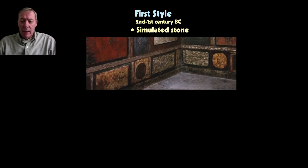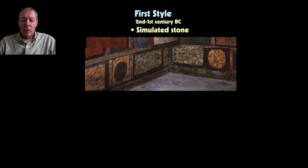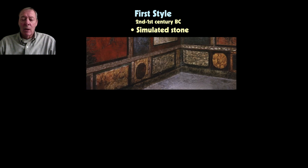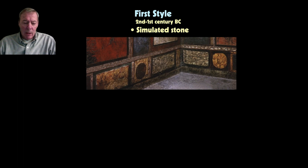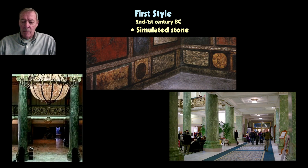The first style was most popular from the second to the first century BC. It basically focused on the simulation of stone. Here at Pompeii we see panels that look as though they are veneers of colored stone, but they are in reality painted fresco panels—the intention was to make a concrete or stone wall covered with plaster look like expensive stone veneers. A modern parallel is the Joseph Smith Memorial Building in Salt Lake, where wooden columns covered with plaster are painted to look like green marble.